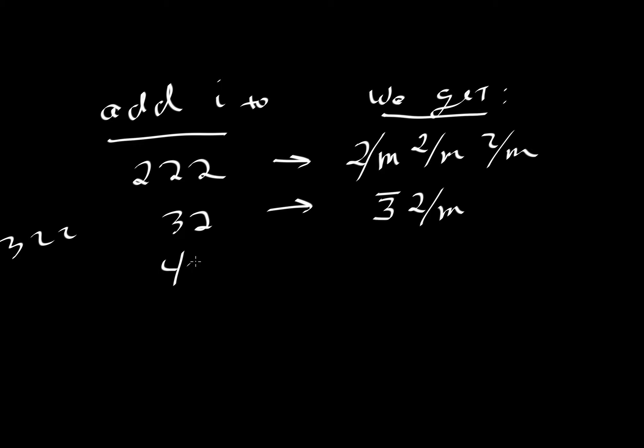If we have 4, 2, 2, and we add a center of symmetry to this object, then they are all even numbers. So we would have a mirror perpendicular to each of those axes. And then we can do the same with 6, 2, 2: it would be 6 over m, 2 over m, 2 over m.